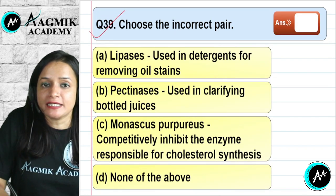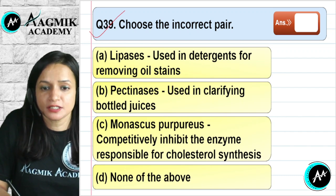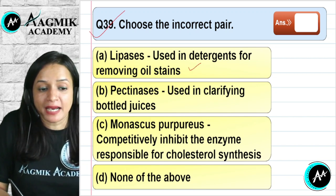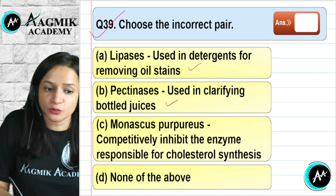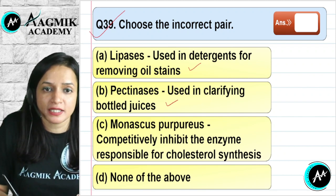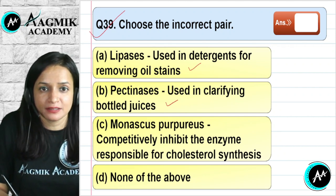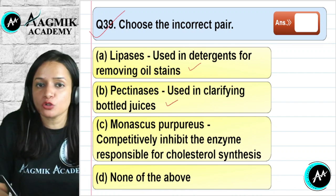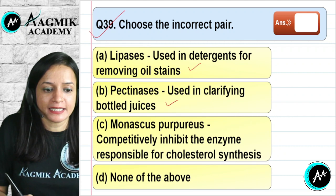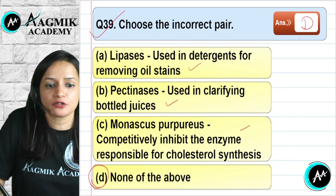Question number 39: Choose the incorrect pair. Lipases used in detergents for removing oil stains — correct. Pectinase used in clarifying bottled juices — correct. Monascus purpureus competitively inhibiting the enzyme responsible for cholesterol synthesis — correct, as it lowers blood cholesterol. Since all pairs are correct, none is incorrect. The correct option is D — none of the above.